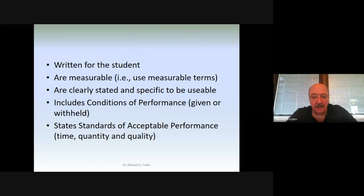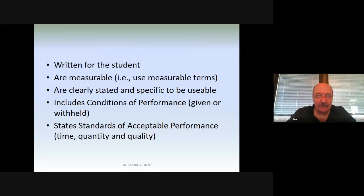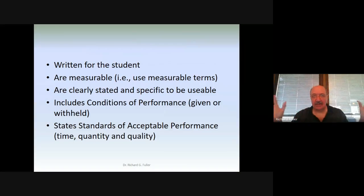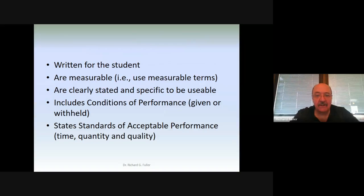There are rules for writing objectives. The first: objectives must be written for the student. You don't want to write them for instructor behavior — you want to write them from the perspective of what the student is going to be like at the end of that lesson. It has to be student-centric, not instructor-centered. That's why we call them behavioral objectives: we're looking to change the student's behavior, whether at kindergarten, high school, college, or doctoral level.